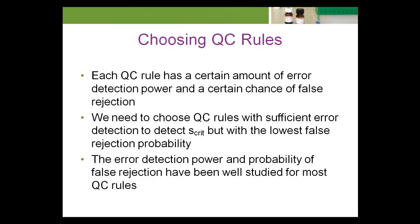Once we know what S-critical must be detected, we look for QC rules that have a high degree of probability of detecting it, and a low false rejection rate.